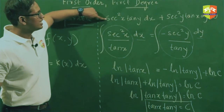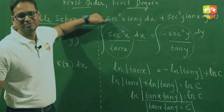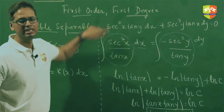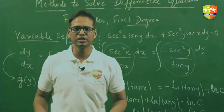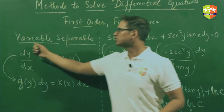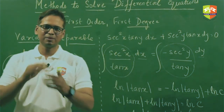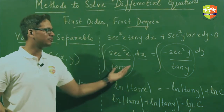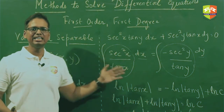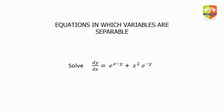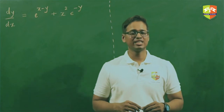We can get rid of the log from both sides, giving tan(x) tan(y) = c. This is the family of curves that satisfies the differential equation — this is the general solution obtained by the variable separable method, where I separated the variables and integrated both sides.